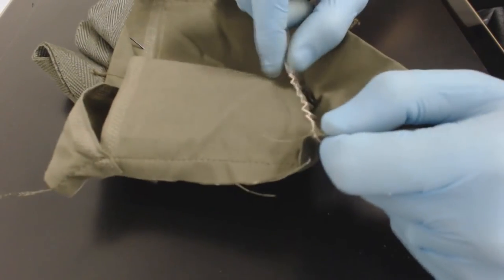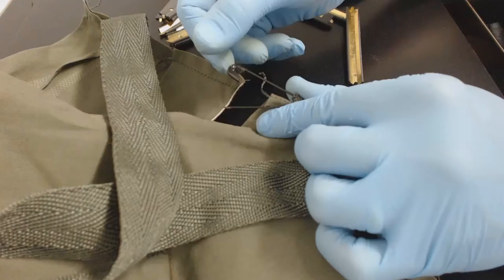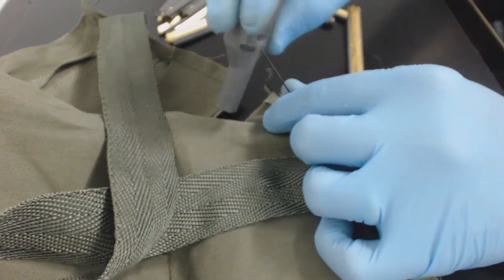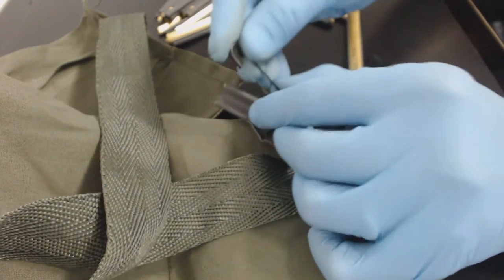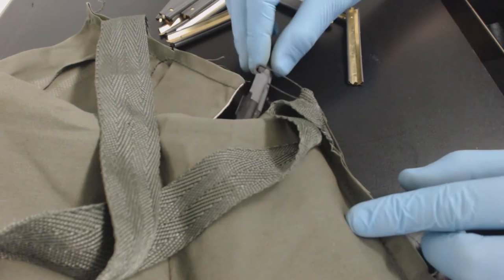And this tab right here, if you pull it, it'll release the whole thing so you could load magazines into it. It also has a pin to hold the spoon in place so you don't lose that.